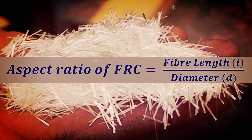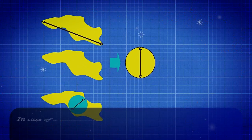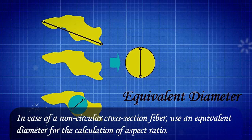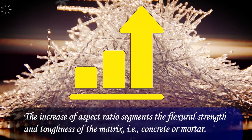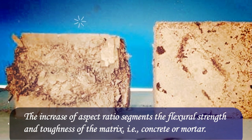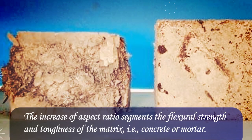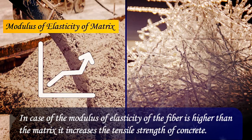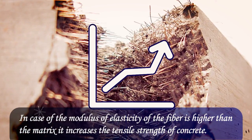The aspect ratio of FRC is calculated by dividing the fiber length (L) by its diameter (D). In the case of a non-circular cross-section fiber, an equivalent diameter is used for the calculation of aspect ratio. The increase of aspect ratio improves the flexural strength and toughness of the matrix, i.e., concrete or mortar.